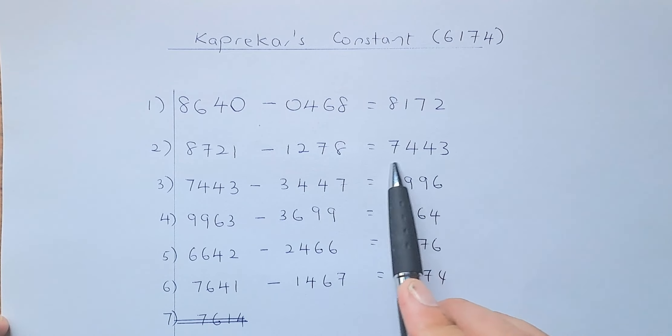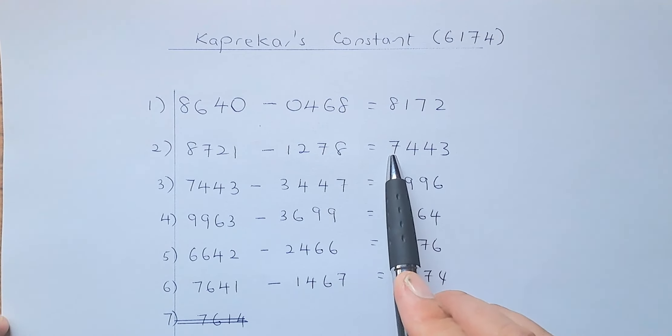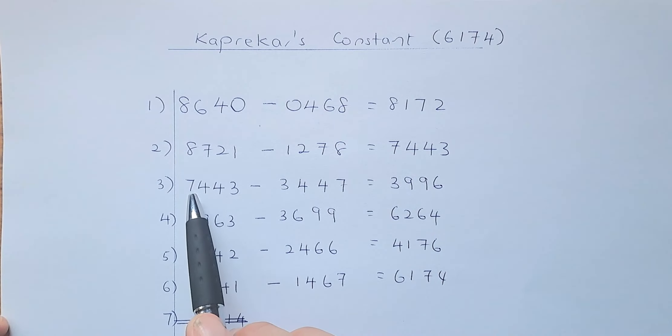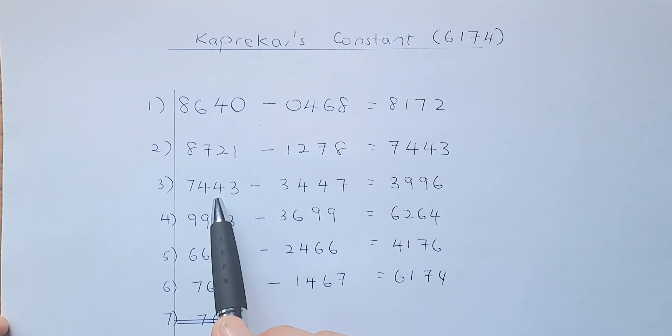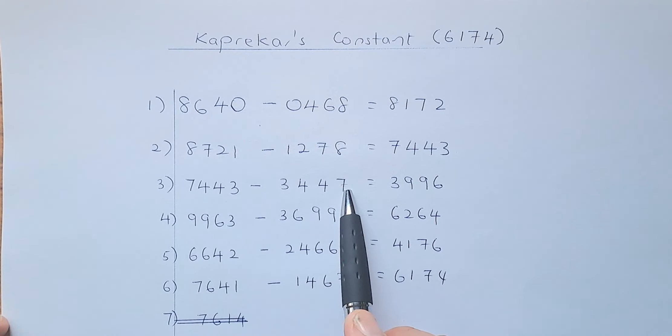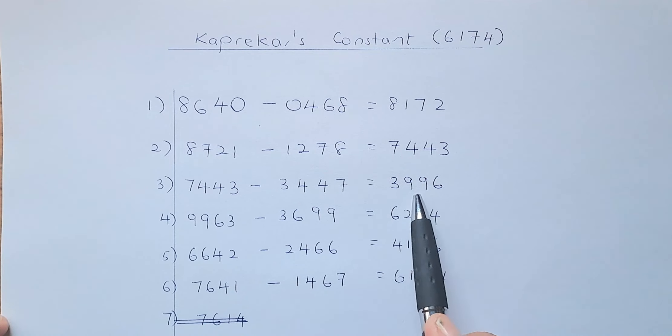Do the steps again. 7443 is in order from biggest to smallest, so you don't have to do anything. So 7443 remains. You're going to minus the reverse, which is the smallest to the biggest, so 3447. And put in your calculator, it's going to get 3996.